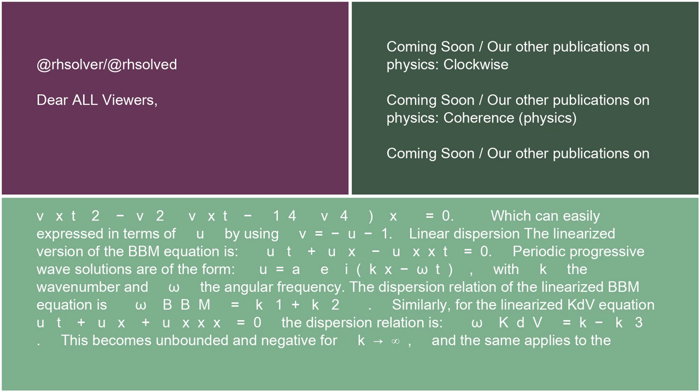which can easily be expressed in terms of u by using v = -u - 1. Linear dispersion: the linearized version of the BBM equation is u_t + u_x - u_xxt = 0. Periodic progressive wave solutions are of the form u = Ae^i(kx - ωt),